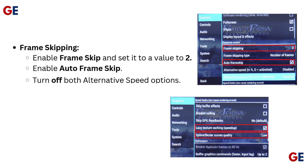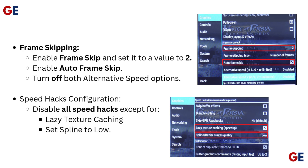Frame skipping: enable frame skip and set it to a value of 2. Enable auto frame skip, and turn off both alternative speed options.